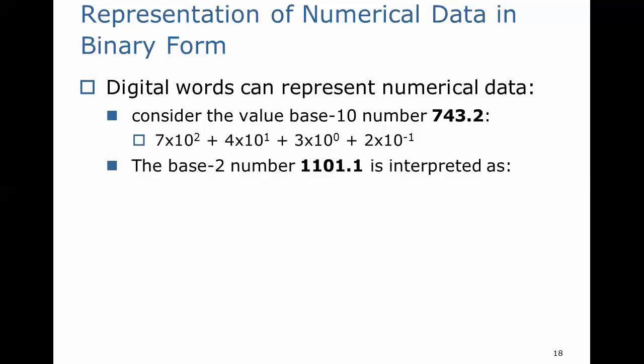The base 2 number 1101.1 is interpreted as 1 times 2 to the third, which is 8, so 1 eight, 1 four, 0 twos, 1 one, and 1 one-half. When we add that up, we arrive at 13.5, which is its equivalent in base 10.